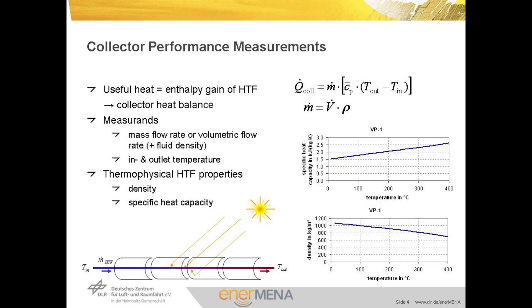Furthermore, the thermophysical properties of the heat transfer fluid have to be known. Its density is required to calculate the mass flow rate from the volumetric flow rate; the specific heat capacity is needed for the calculation of the enthalpy gain of the HTF. The value of the mean specific heat capacity is determined by means of integration in the relevant temperature interval and is not trivial for non-linear functions of heat capacity with temperature. The precise experimental determination of temperature characteristics of the thermophysical properties of the HTF is very challenging, fraught with uncertainty and represents a considerable contribution to the overall uncertainty budget.